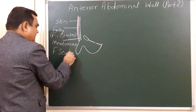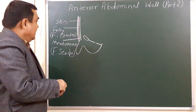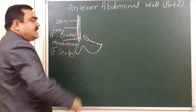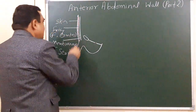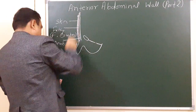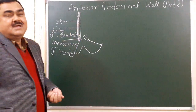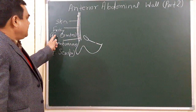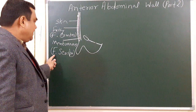The membranous layer is called fascia Scarpa. Below the level of the umbilicus, these two layers are separately present. Above this level, these two layers fuse to form a single layer. So below the umbilicus, one layer is fascia Camper — the fatty layer — and another layer is the membranous layer, which is fascia Scarpa.